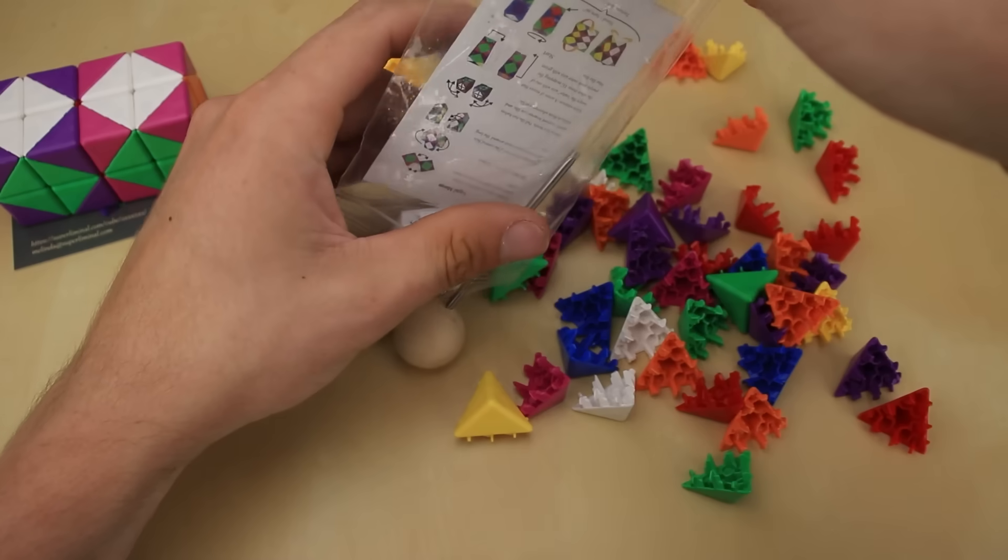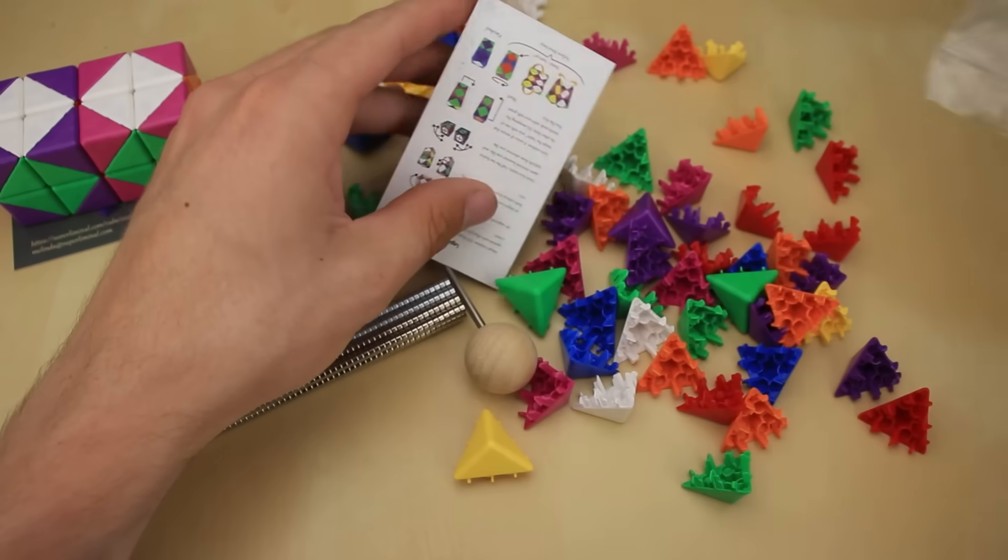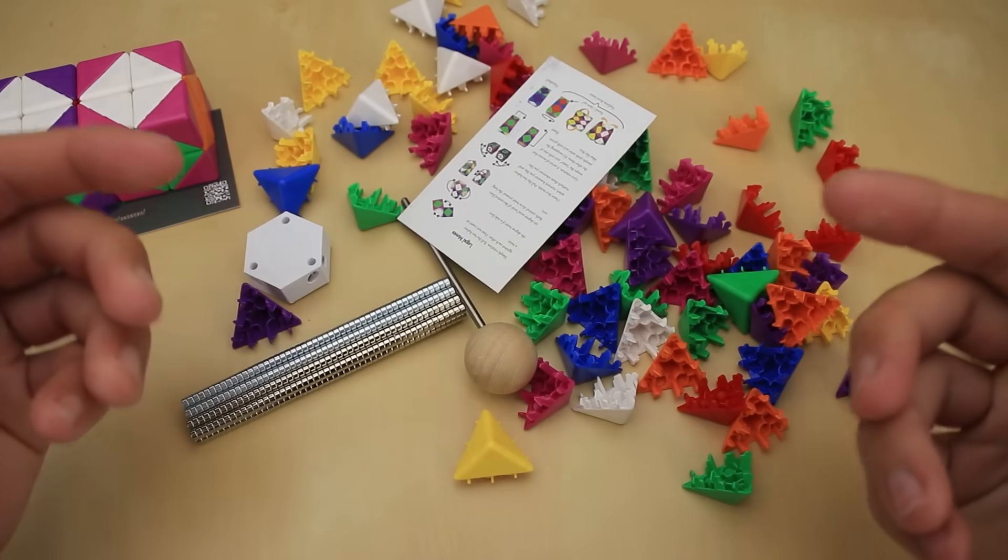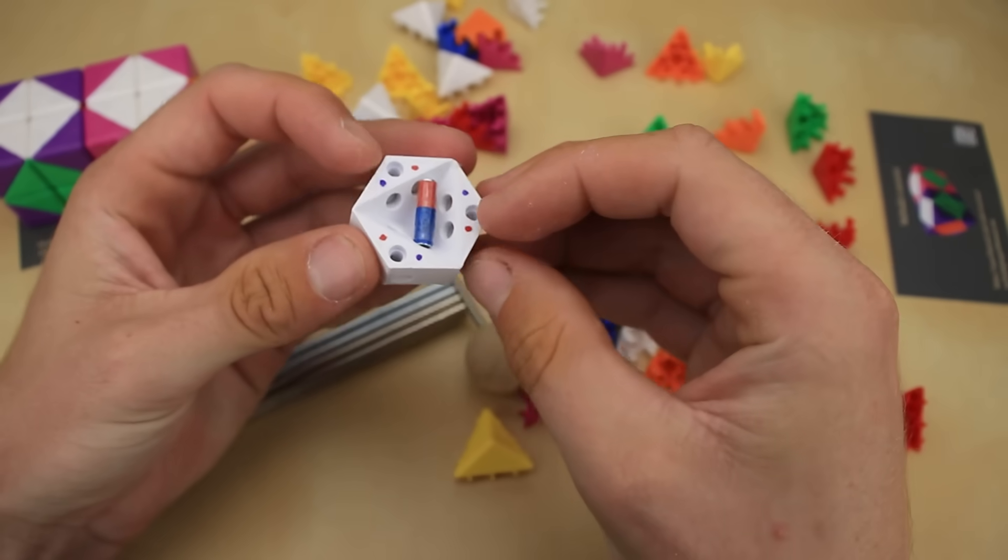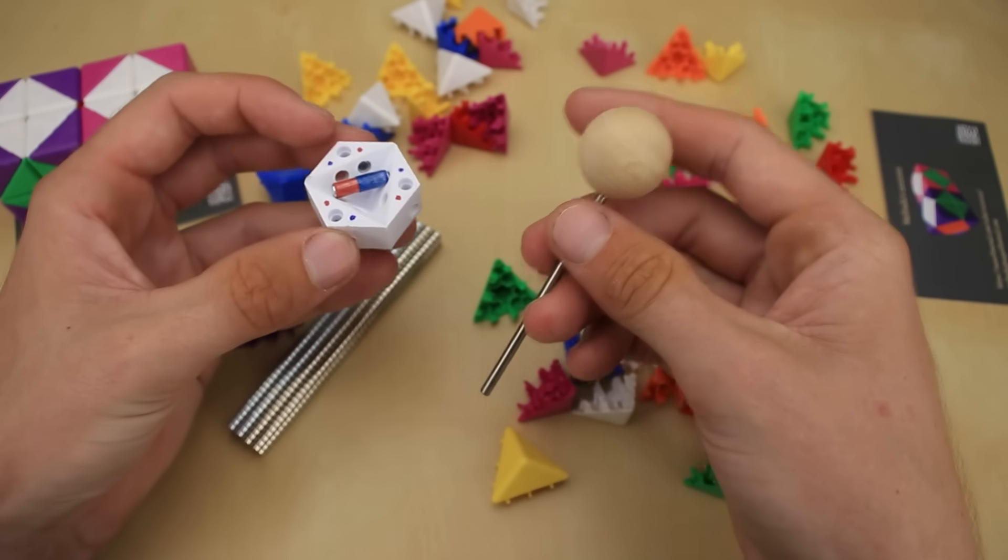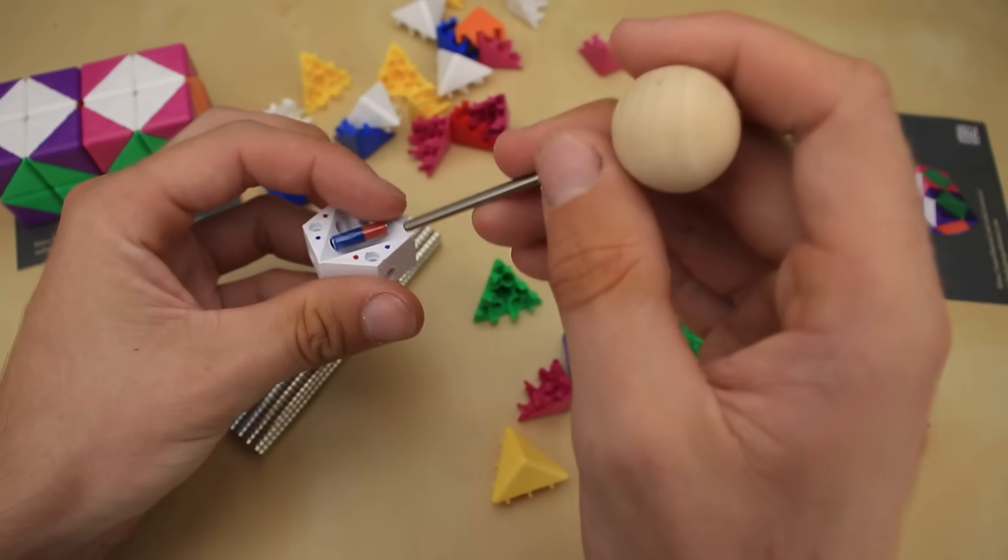It might seem overkill, but trust me, this is actually the most practical way to implement all the crazy ways that this puzzle can turn. Now, the kit also includes this little guide to make sure you get the polarity of all the magnets correct, as well as a wooden lollipop, which is actually used to push the magnets into place.